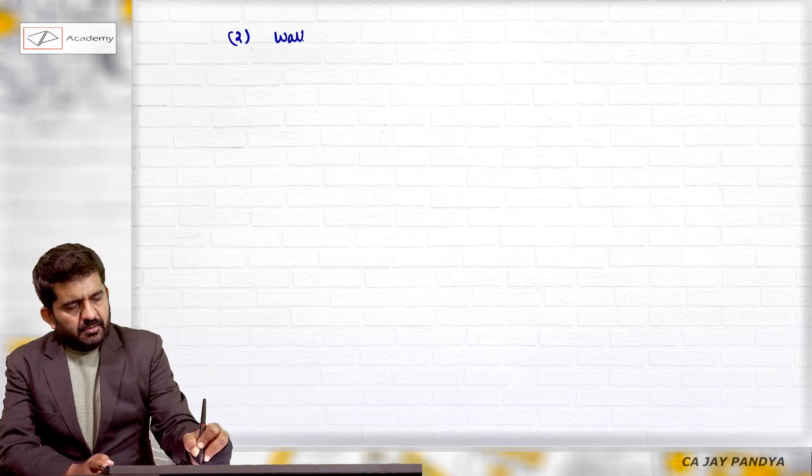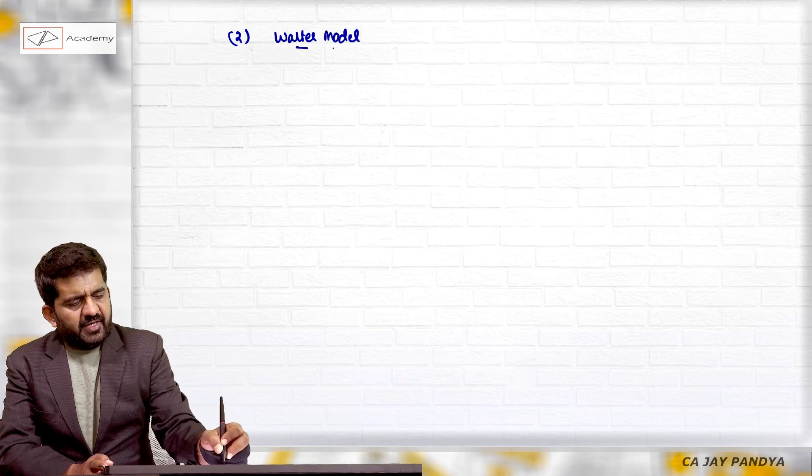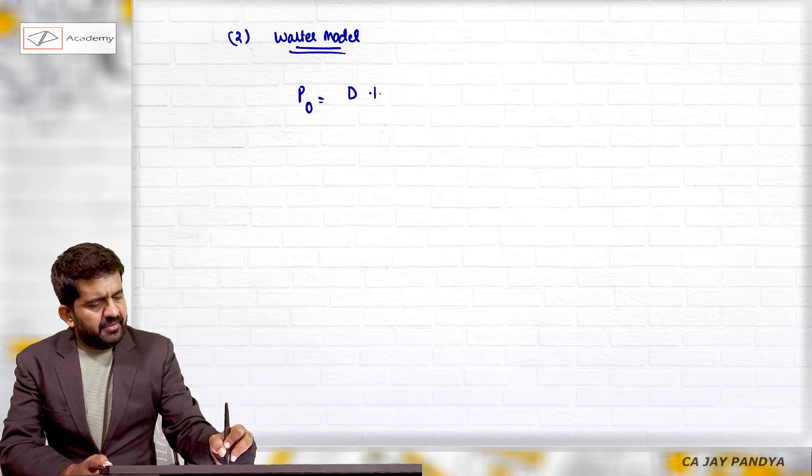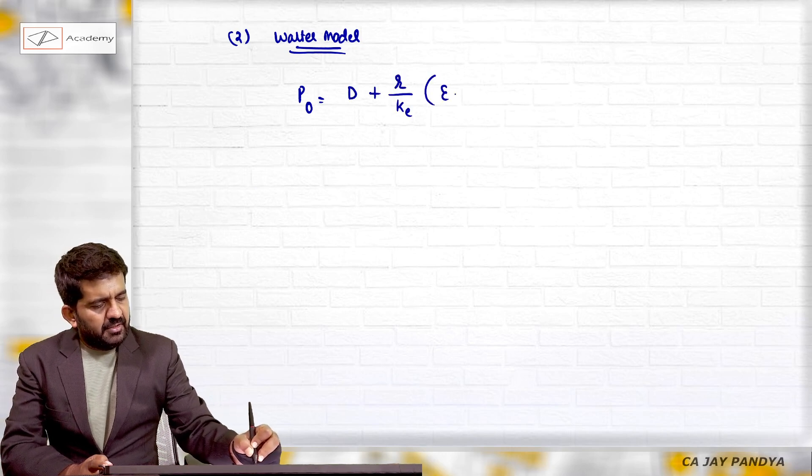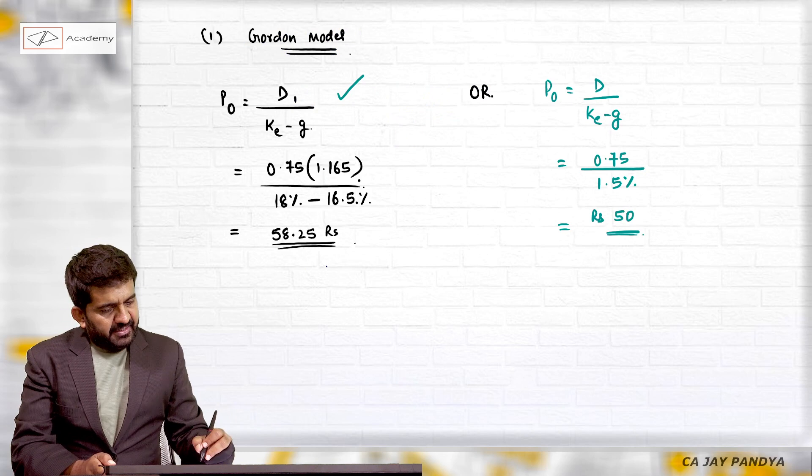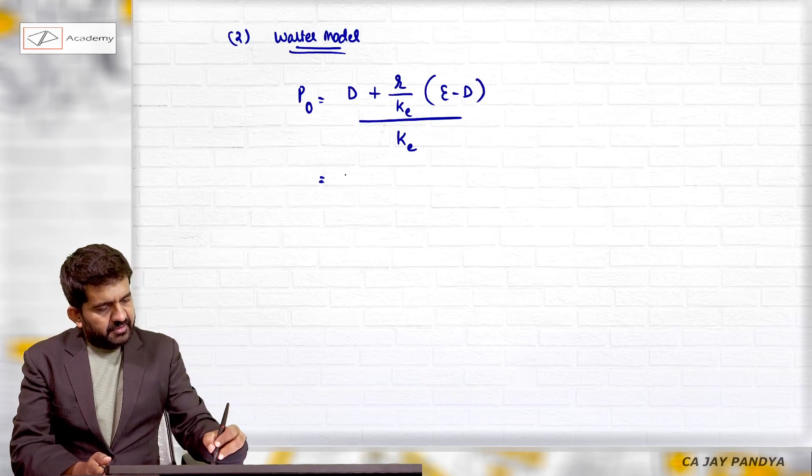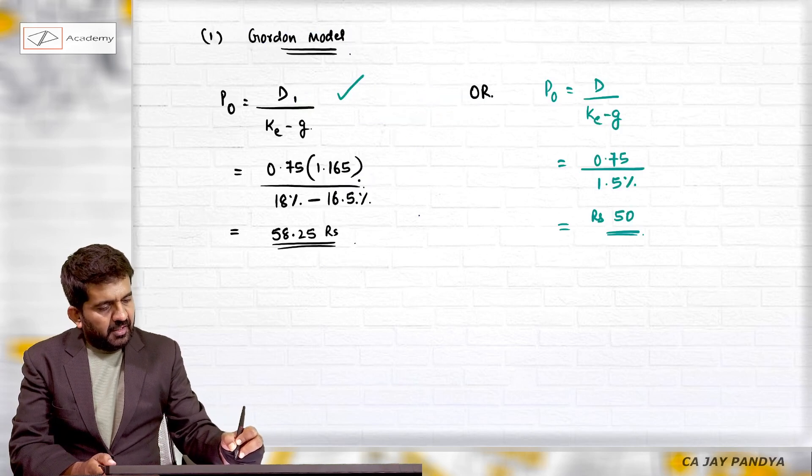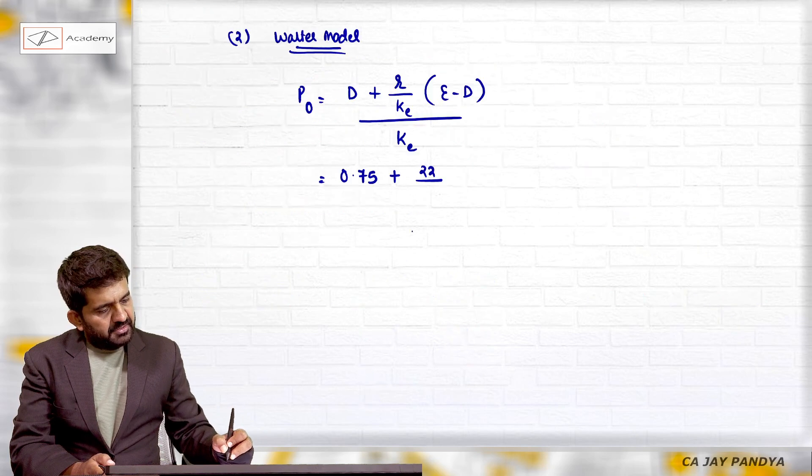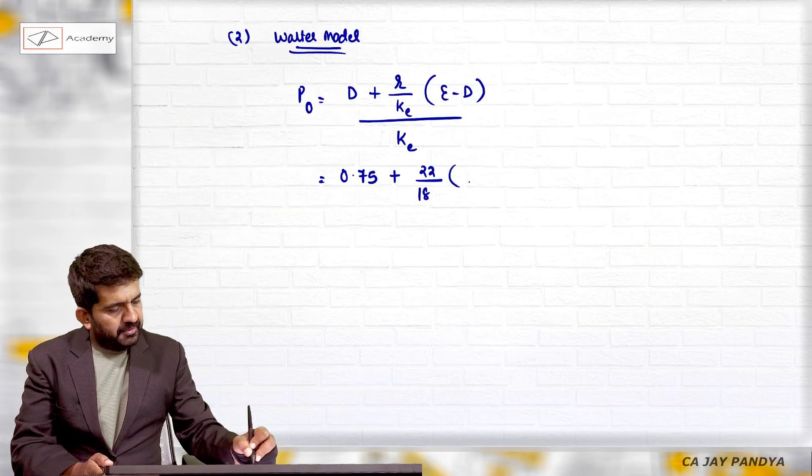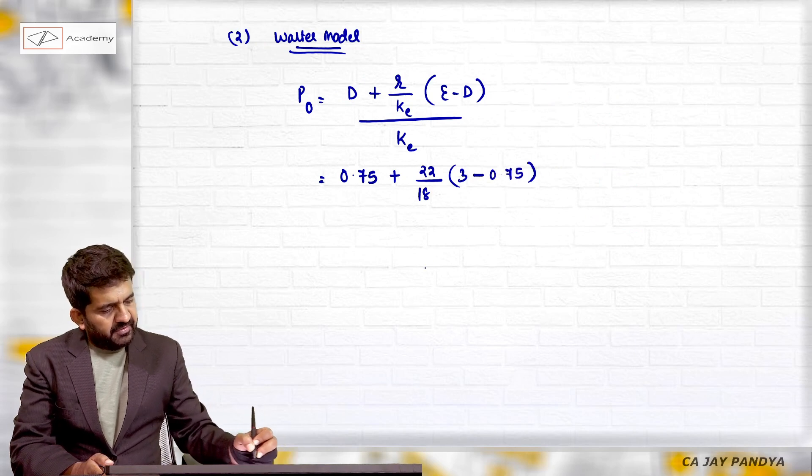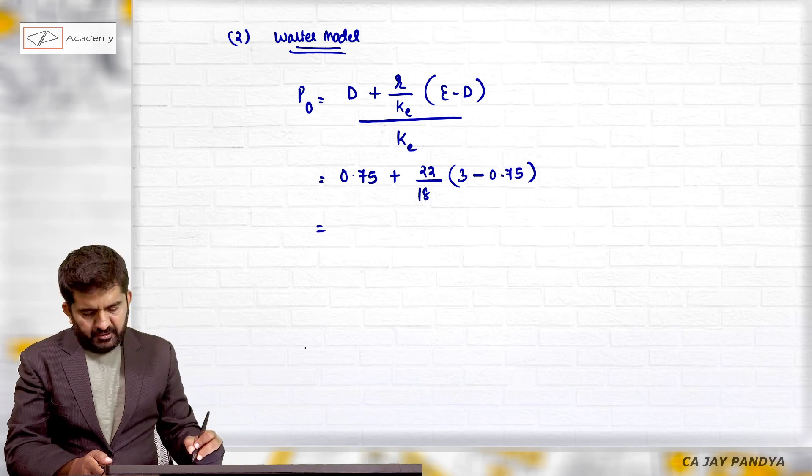Number two is Walter model. Now in Walter model, we never take D1. How we find out P0 is: dividend plus r upon Ke times (E minus D) upon Ke. What is D? 0.75. r is 22%, Ke is 18%, E is 3 minus D, which is 0.75.